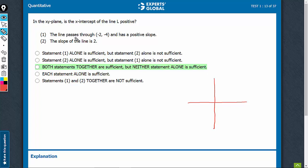Statement 1 says, line passes through (-2, -4) and has positive slope. (-2, -4) means, and here, this spot is (-2, -4). Now, a line passing through this and has a positive slope.